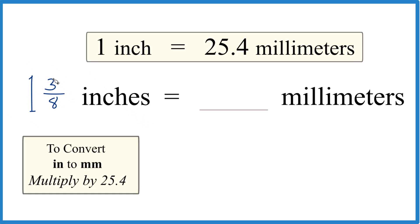If you divide 3 by 8, so 3 divided by 8 on a calculator, you get 0.375. So this is actually 1.375, and the units are inches.